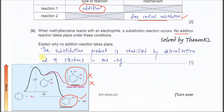The substitution product is stabilized by delocalization of the pi electrons in the ring, making it more stable. That's why substitution happens rather than addition — the stabilization is due to the delocalization of pi electrons in the ring.